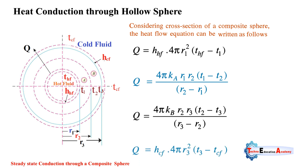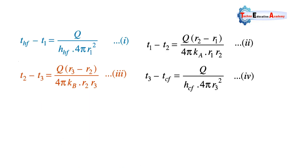Convection also takes place between the outermost layer of the hollow sphere and the cold fluid or atmospheric air, following Newton's law of cooling. So Q equals hcf times 4π r3² times (t3 minus tcf), where tcf is the temperature of the cold fluid. This gives us equations 1, 2, 3, and 4.